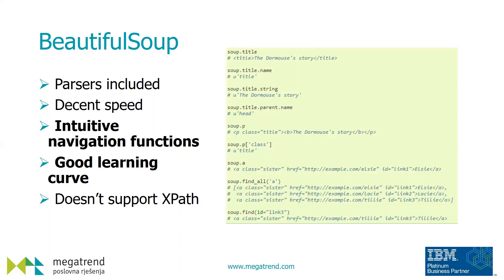The advantages of Beautiful Soup are that all parsers are included — you can use the built-in HTML parser, the lxml parser, or the html5lib parser; you just download the additional parsers. It has decent speed and is easy to learn; navigation functions are simple with find() and find_all(), and you can search by class, ID, and so on. The only disadvantage is that it doesn't support XPath and is not built for JavaScript dynamic pages.